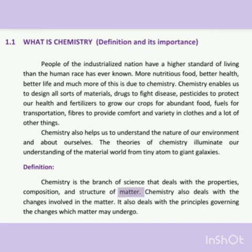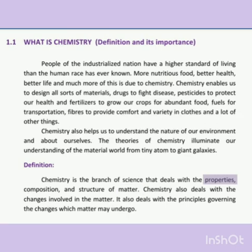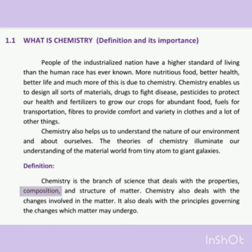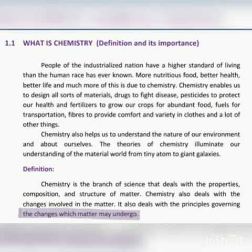What is matter? Matter is anything that has mass and occupies space. The properties of any substance means the characteristics of that substance — for example, oxygen is a gas, sulfur is a solid, and mercury is a liquid. Substances combined with each other to form a compound; this is called composition. A compound is when two or more substances are combined chemically in a fixed ratio.